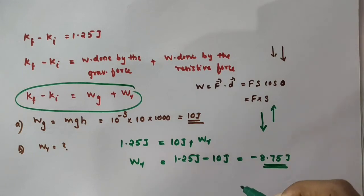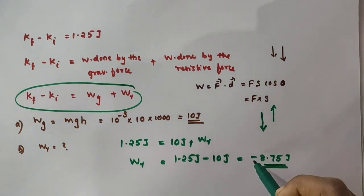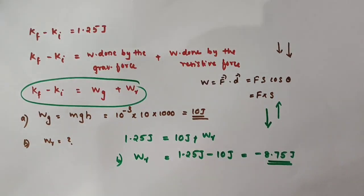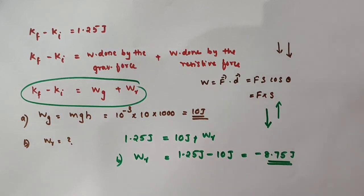The raindrop moves downward but the resistive force acts upward, which is why we got a negative sign. This is the answer for the work done by the resistive force, which was sub-question (b). In this video we discussed example 6.2 from chapter 6 class 11 physics — work, energy, and power — using the work-energy theorem. I will provide the link for the work-energy theorem in the description box. I hope you understood this. Thank you.